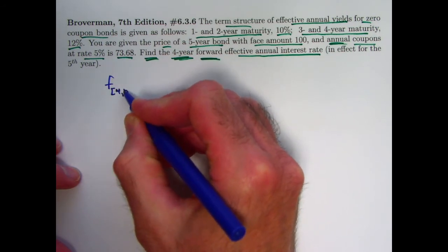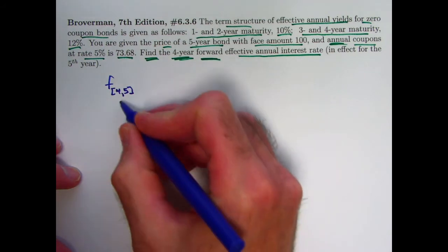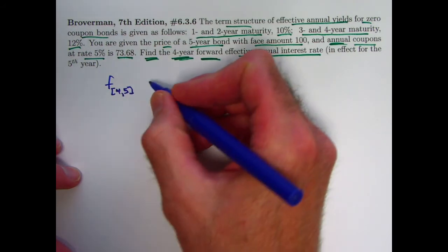So this is interval notation. This forward rate is in effect from time 4 to time 5. N is 5 here.